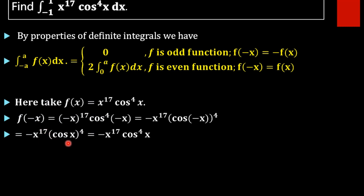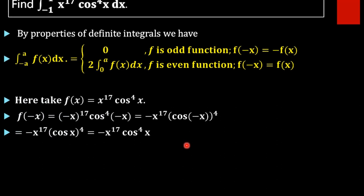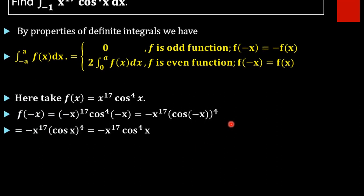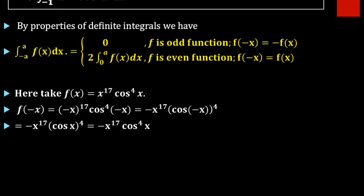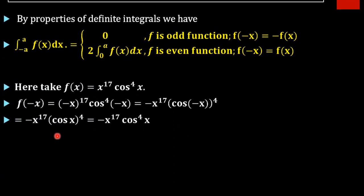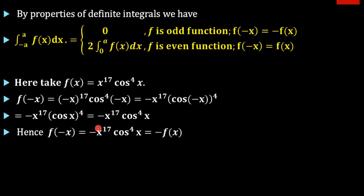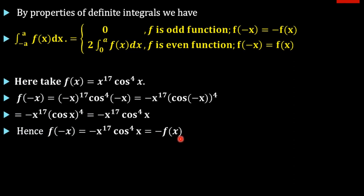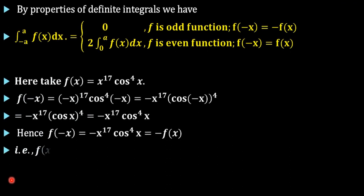Since cos of minus x is cos x itself, cos x whole raised to 4 gives us cos raised to 4x. So f(minus x) equals minus x raised to 17 into cos raised to 4x, which equals minus f(x). Therefore this is an odd function, and by the property the integral from minus 1 to 1 equals 0.